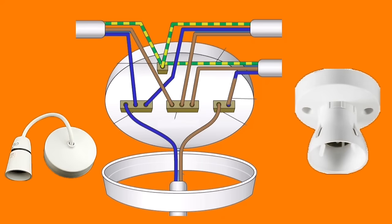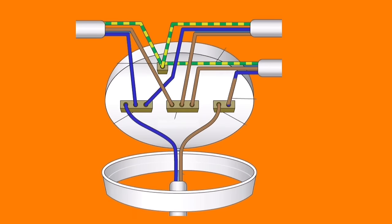This ceiling rose and pendant or batten lamp holder has been opened out to expose the terminations. Let's look at those terminations first.